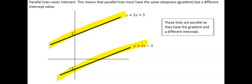An example of parallel lines are two train tracks — they run along beside each other and they're never going to intersect; they're always going to stay the same distance apart. What I mean by that is the distance from here to here would be the same as the distance from here to here.